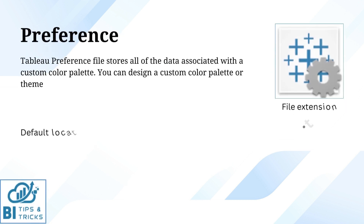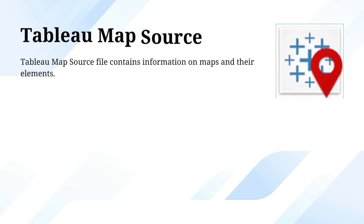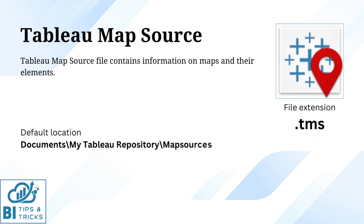The next file type is Tableau Preference. The Tableau Preference file stores all of the data associated with a custom color palette. You can design a custom color palette or theme. And the last file type in Tableau is Tableau Map Source. The Tableau Map Source file contains information on maps and their elements.